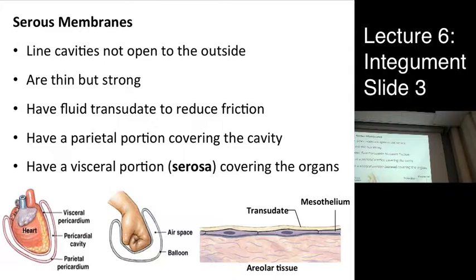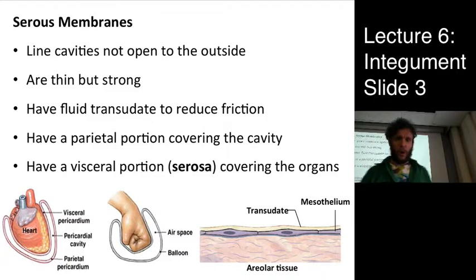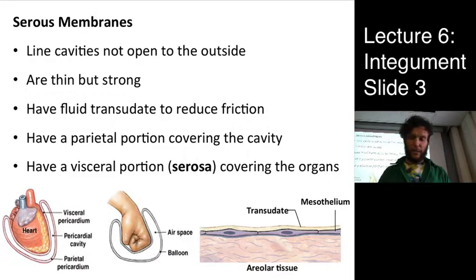Friction occurs where things are moving, so these surround structures in the body that move. Obviously the heart is going to have one of these serous membranes. The lungs — constantly breathing, expanding and contracting — and the stomach. The entire abdominal contents are surrounded in one of these serous membranes because food is moving through there, and nobody wants a high-friction burrito passing through their gut. These serous membranes have two portions: the parietal and the visceral.